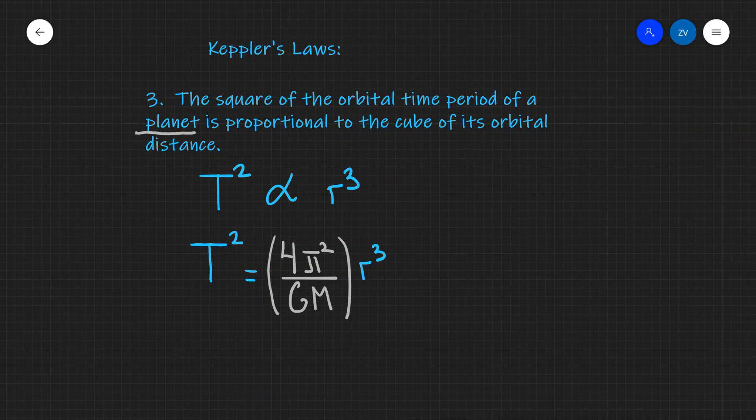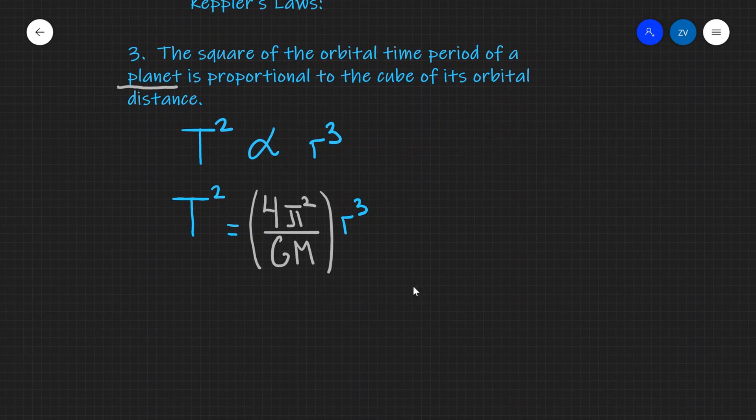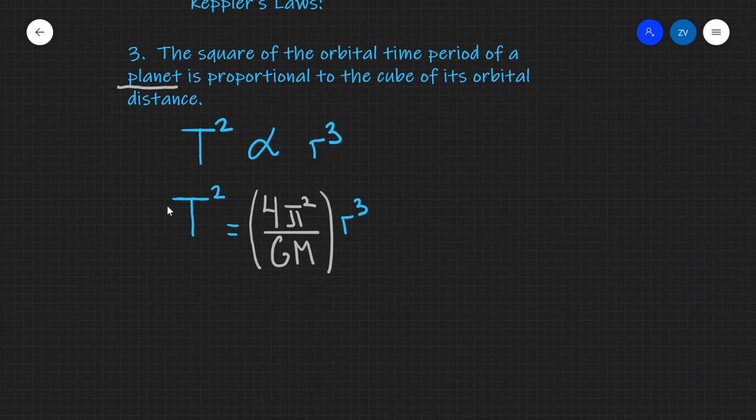Okay folks, so hopefully Kepler's laws now make sense. In my next video I'm going to be deriving this mathematical statement, and this is actually given in your formula sheet that the square of the orbital time period is proportional to the cube of its orbital distance. The constant of proportionality, 4π²/GM, is also given so we can directly apply that to problems. What we're going to do in the next video is derive this mathematical statement.